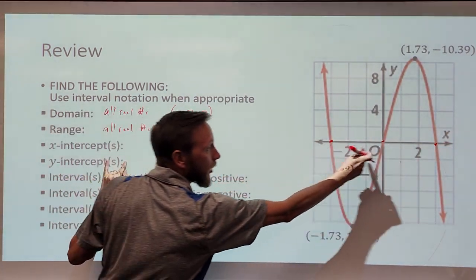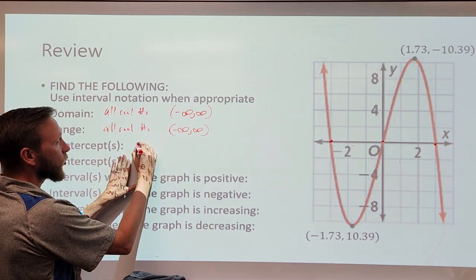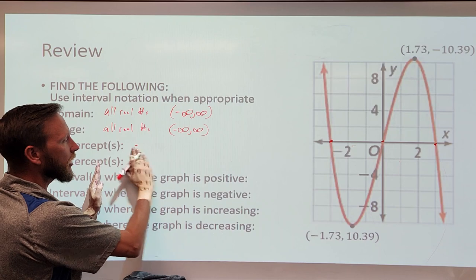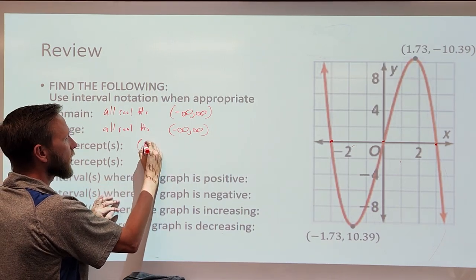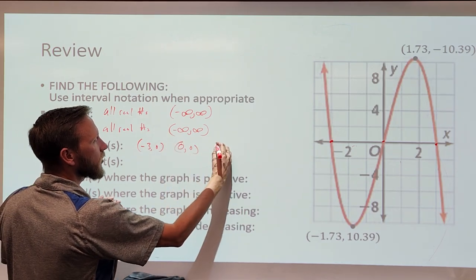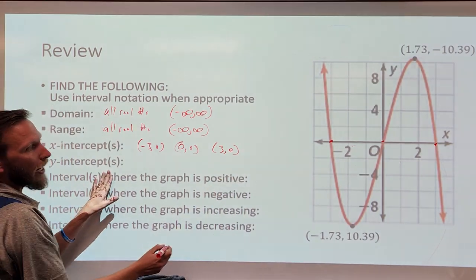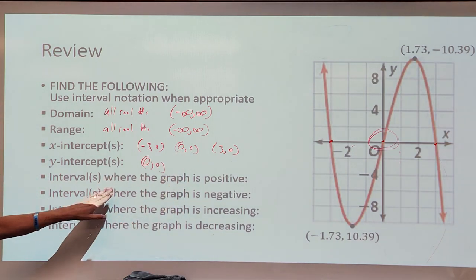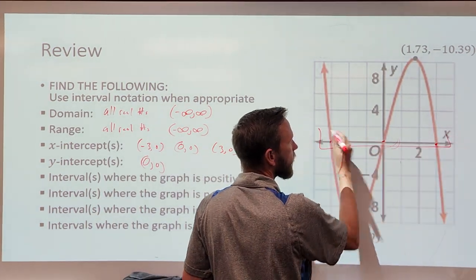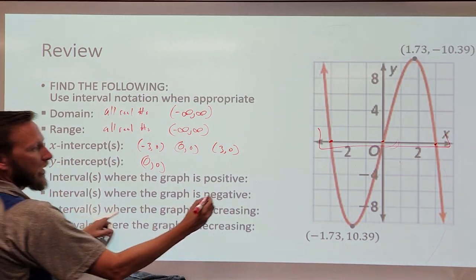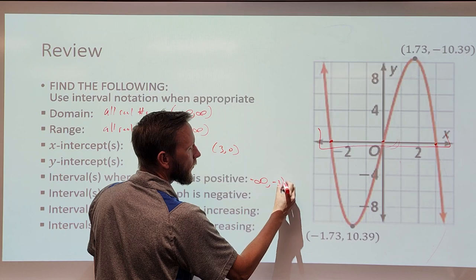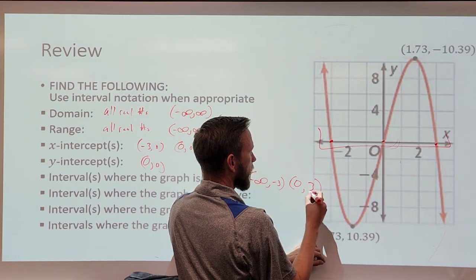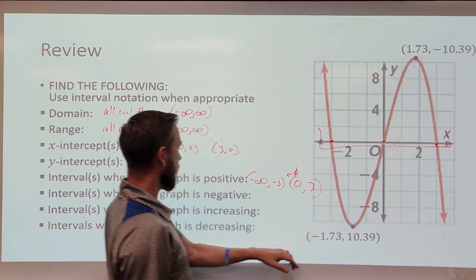Where is the graph positive? It is positive from negative infinity up to negative 3, and then from 0 up to positive 3. That's the only part where it's positive. Where is it negative? It's going to be from negative 3 up to 0, and from positive 3 to infinity.